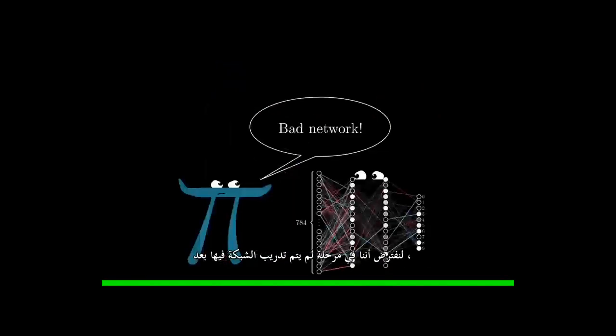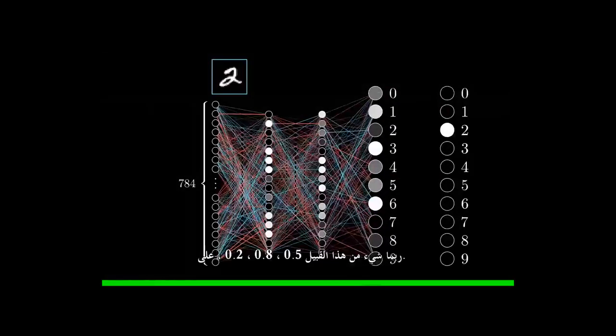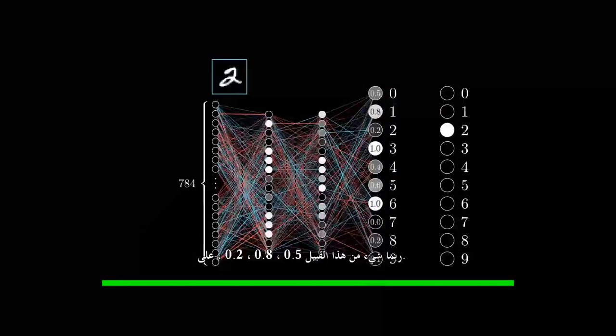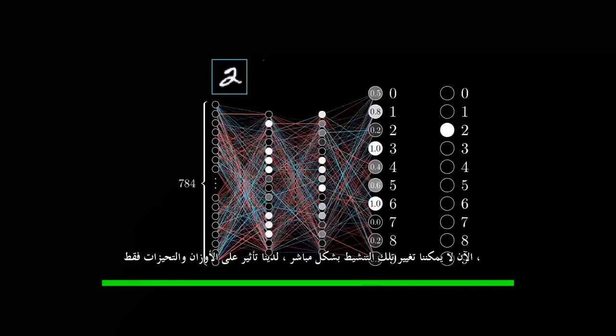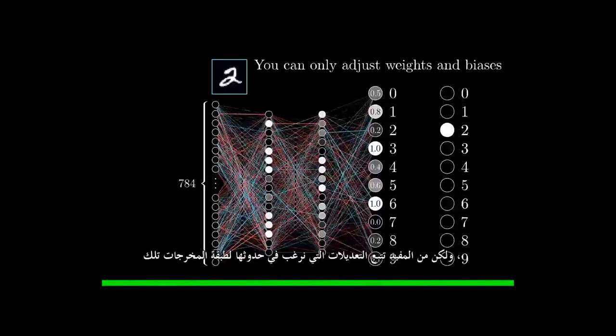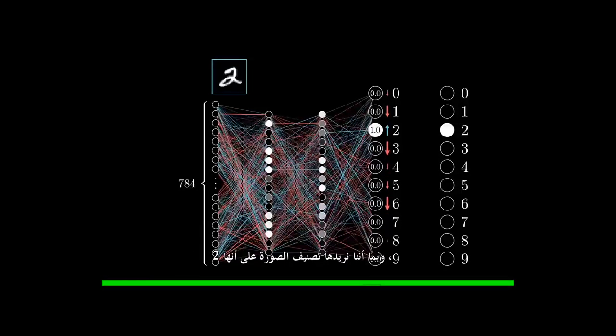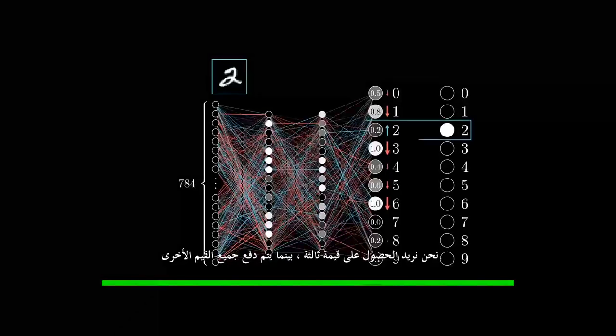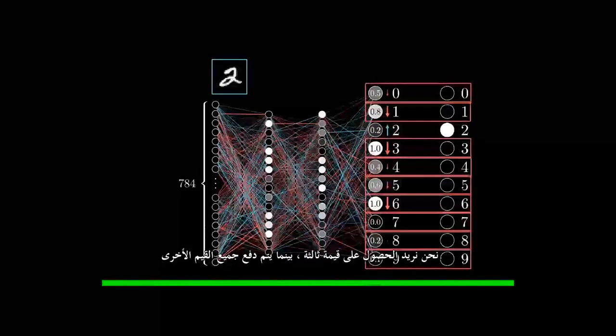Let's say we're at a point where the network is not well trained yet, so the activations in the output are going to look pretty random, maybe something like 0.5, 0.8, 0.2, on and on. Now we can't directly change those activations, we only have influence on the weights and biases. But it is helpful to keep track of which adjustments we wish should take place to that output layer. And since we want it to classify the image as a 2, we want that third value to get nudged up, while all of the others get nudged down.